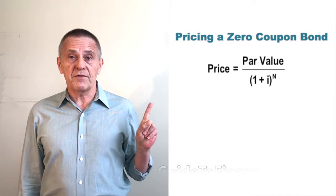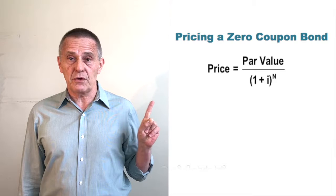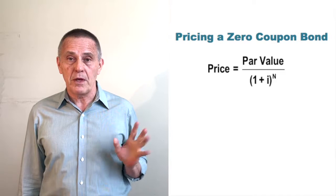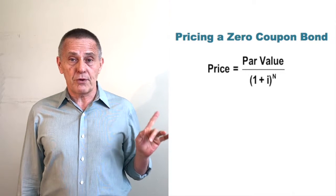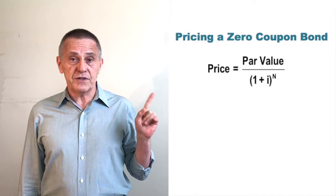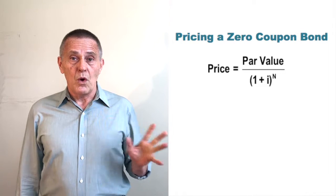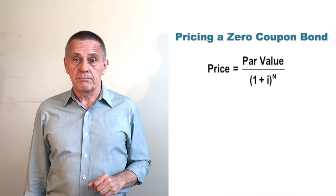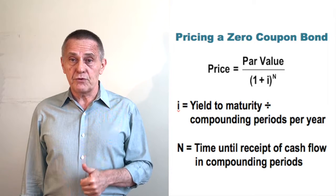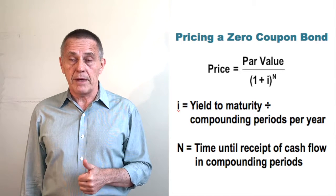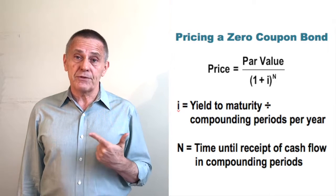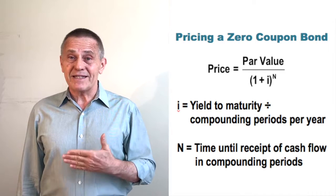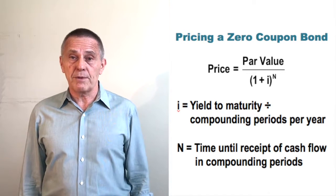The formula for pricing a single cash flow payable in the future — which is another way of describing a zero-coupon bond or Treasury strip — says that price equals the present value of the single cash flow, the par value at maturity, where that par value is divided by (1 + i) raised to the n power. Here, i is the yield to maturity expressed as a periodic rate, and n is the number of coupon periods until that cash flow is payable to the bondholder.